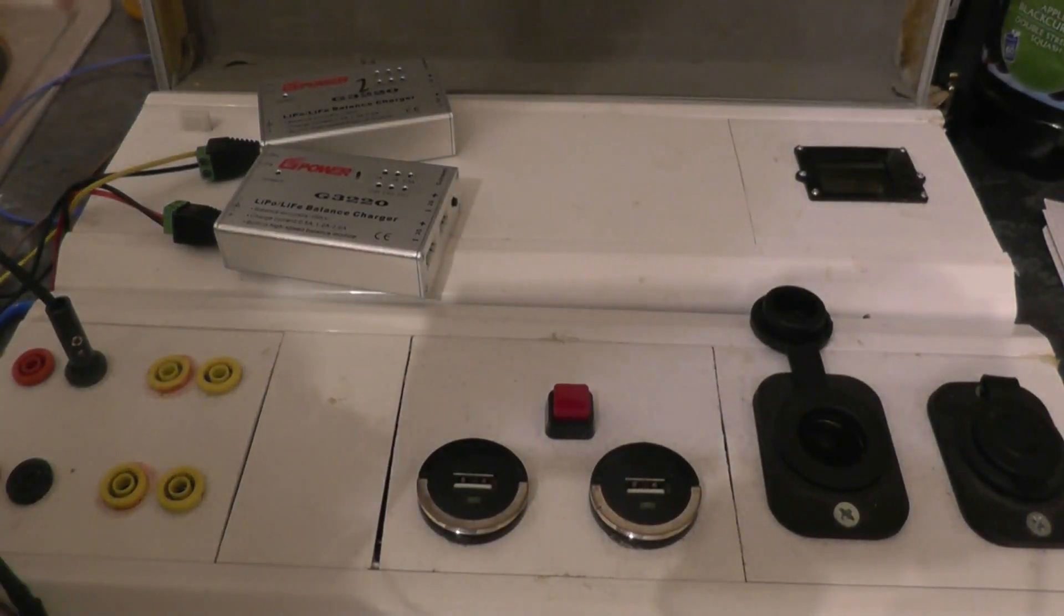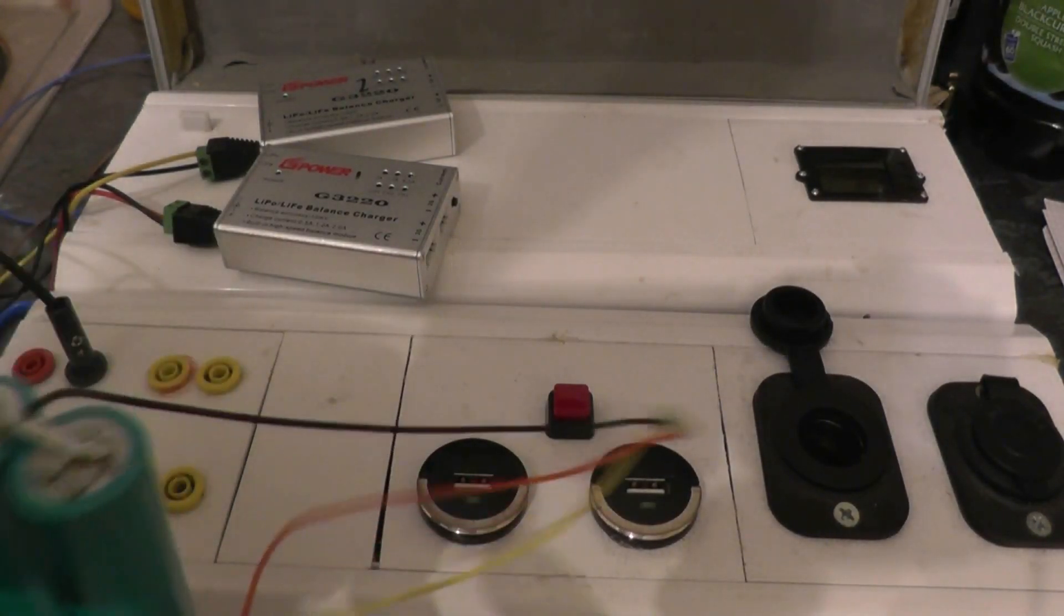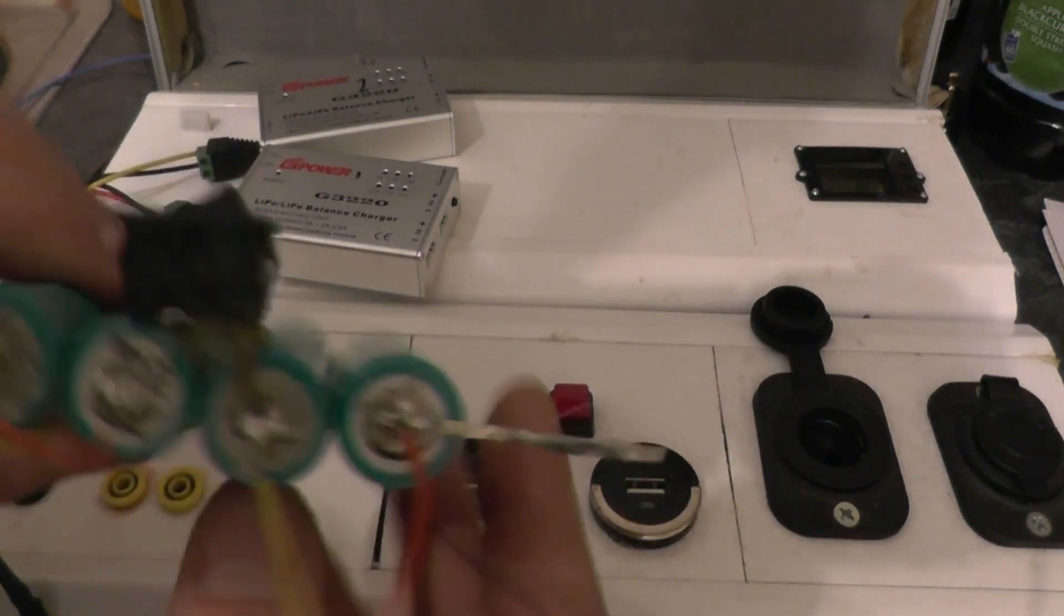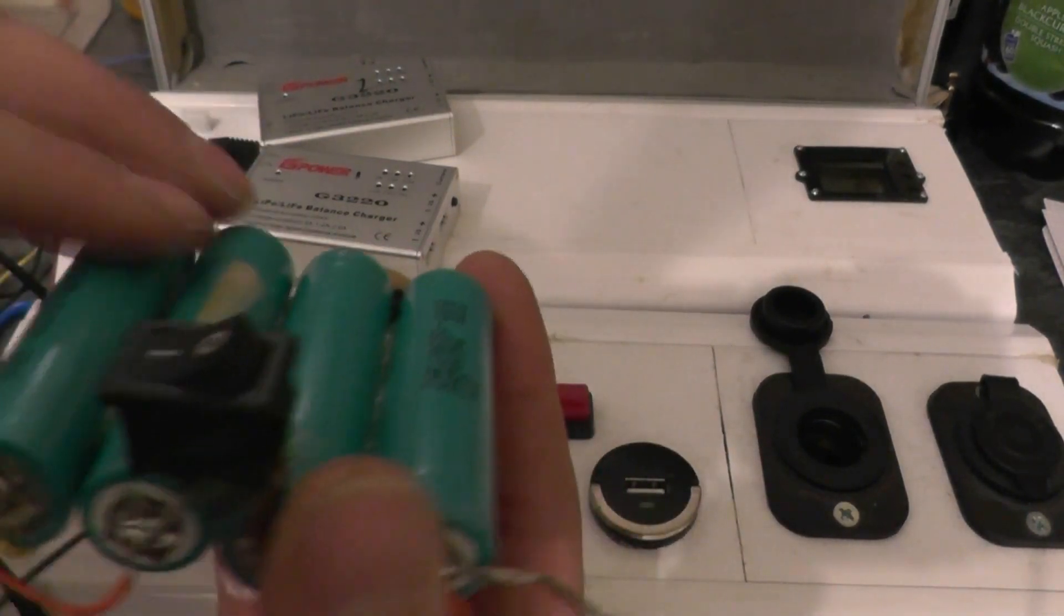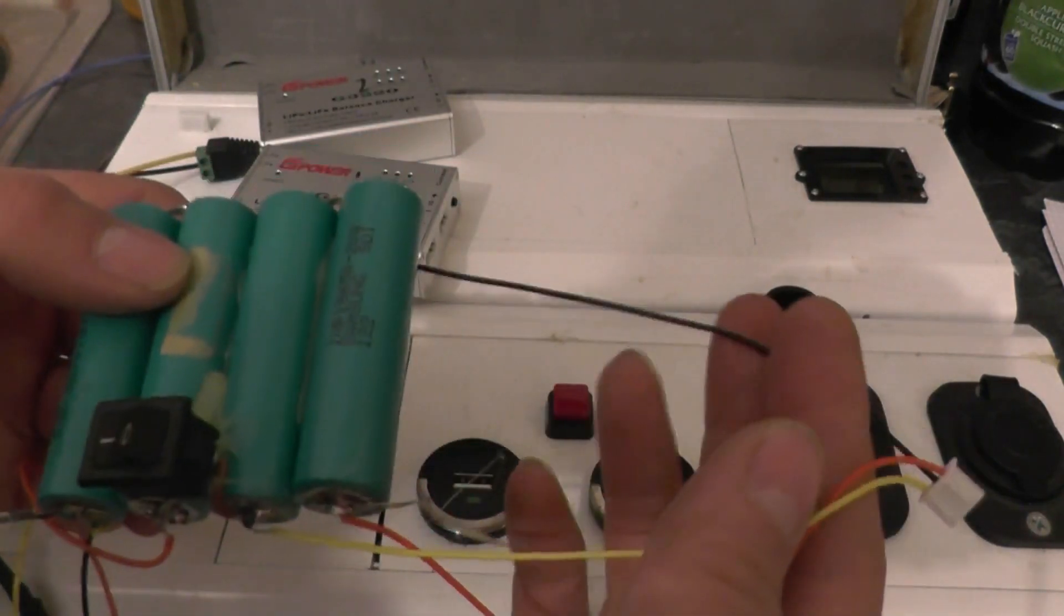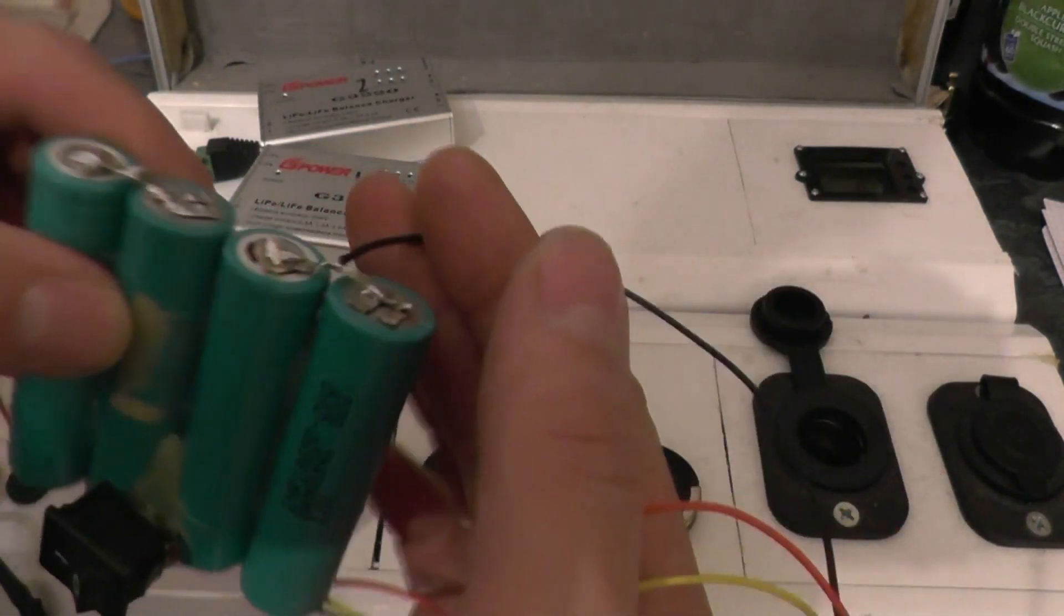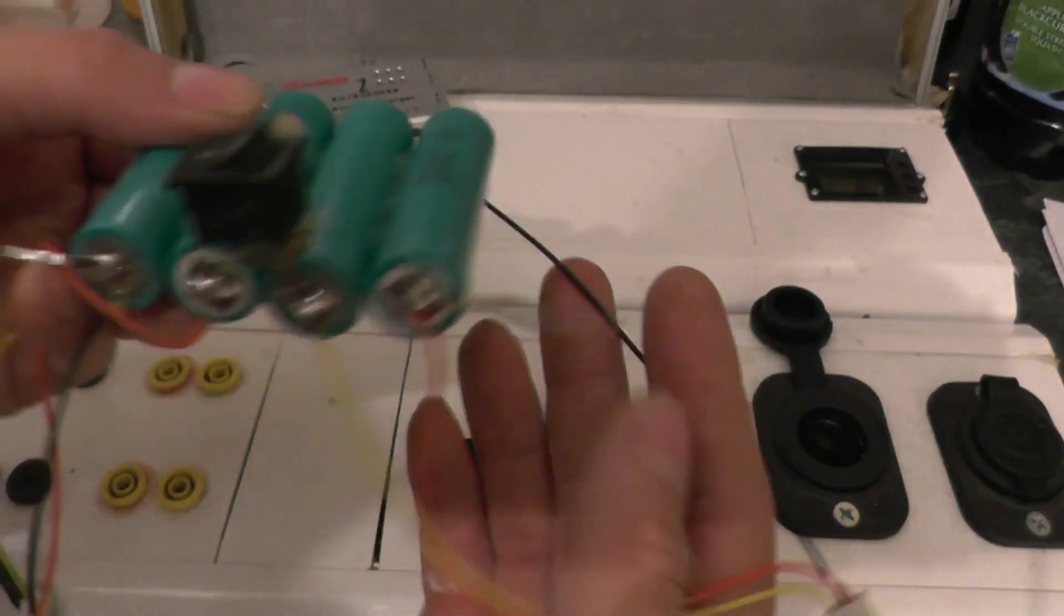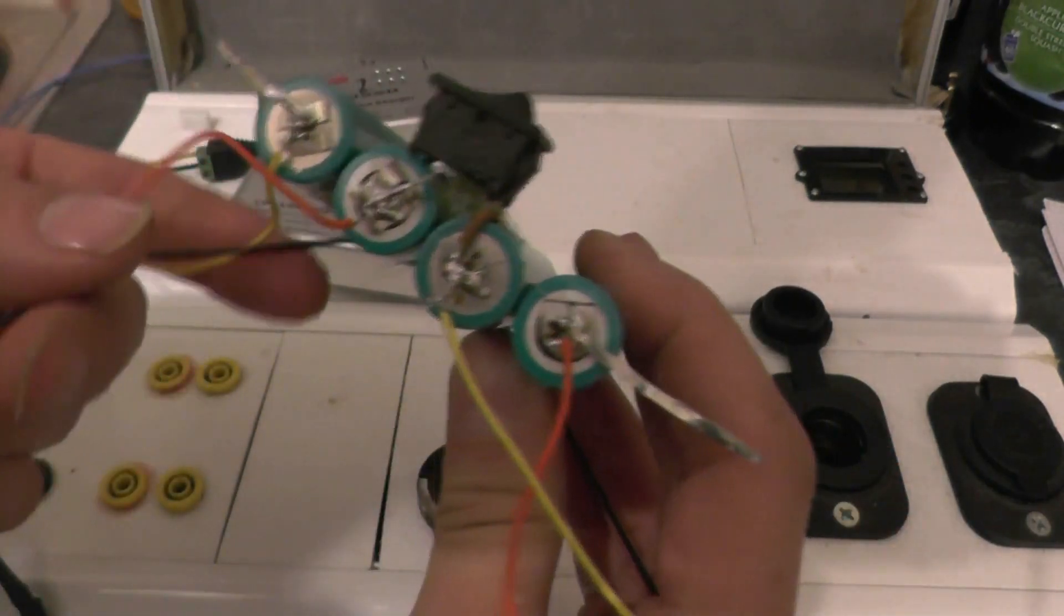Right, well I couldn't just leave the video as it was, so I decided to try it anyway. So now there is a switch separating two cells from the other two. One balance lead sticks to one side, so that's one. And the other balance lead is on this side.